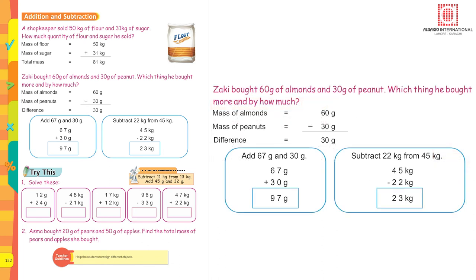Zucky bought 60 grams of almonds and 30 grams of peanuts. Which item did he buy more, and by how much? Mass of almonds is 60 g, mass of peanuts is 30 g. To find the difference, subtract the smaller from the bigger: 60 minus 30 equals 30 grams. He bought more almonds, and almonds are 30 grams more than peanuts.